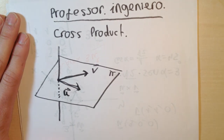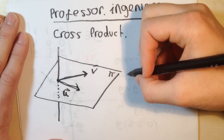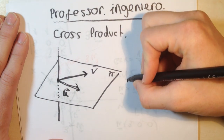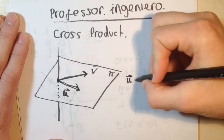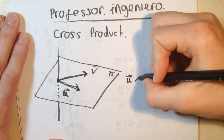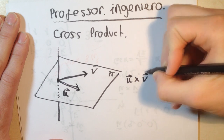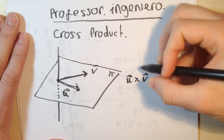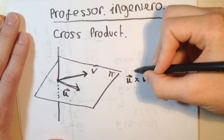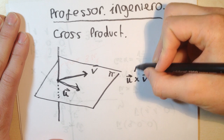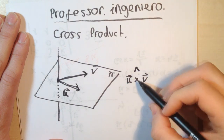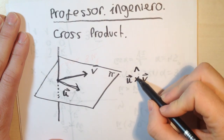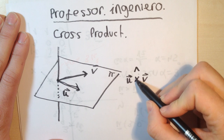What do you need to know about notation? It's always denoted like this: u cross v. Some people also denote it with this kind of triangle symbol, but we will use this cross.